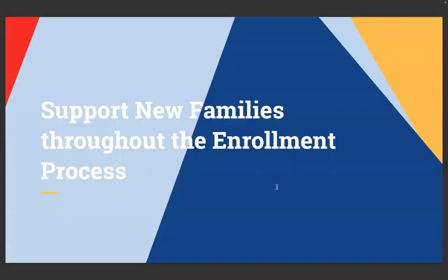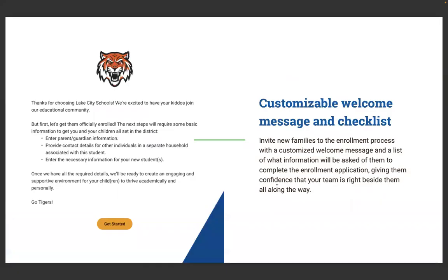Moving along to supporting new families throughout the enrollment process. This is a big thing with us in JMC — we want to empower schools to get off on the right foot with their new families, but also provide families with information pertinent to their district. Not every school is a one-size-fits-all cookie cutter district, and we know that. That's why we provide the versatility throughout the enrollment process. Invite new families to the enrollment process with customized welcome messages and a list of what information will be asked of them to complete during the enrollment application process, giving them the confidence that your team is right beside them all along the way.